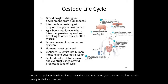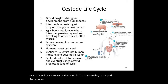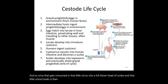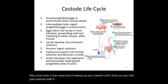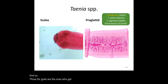When we consume that muscle tissue, the cysticercus develops into a full scolex, which then seeks out the intestine, attaches itself, and begins growing proglottids, eventually repeating the whole cycle.